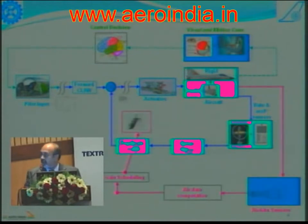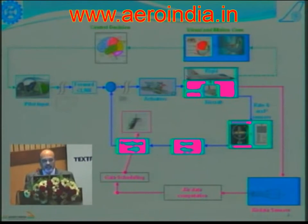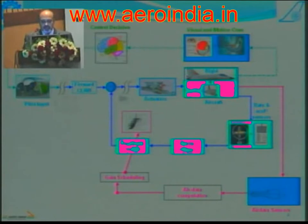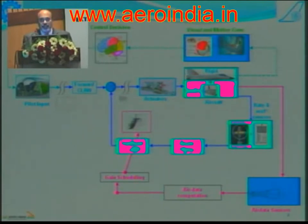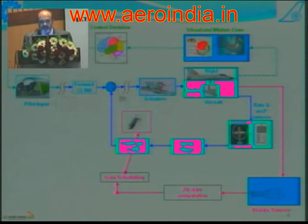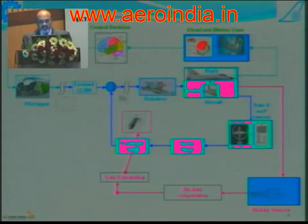Since the model is constantly changing, you need to change the control laws, and one way to know where you are in the envelope is to use the air data system, which gives you the speed of the aircraft, the Mach number, altitude, and flow angles, because the aerodynamic parameters of the variable plant are also a function of these basic parameters. We found that the air data system is as complex, if not more complex — especially a validated air data system — than the control laws, and this also takes a lot of effort.